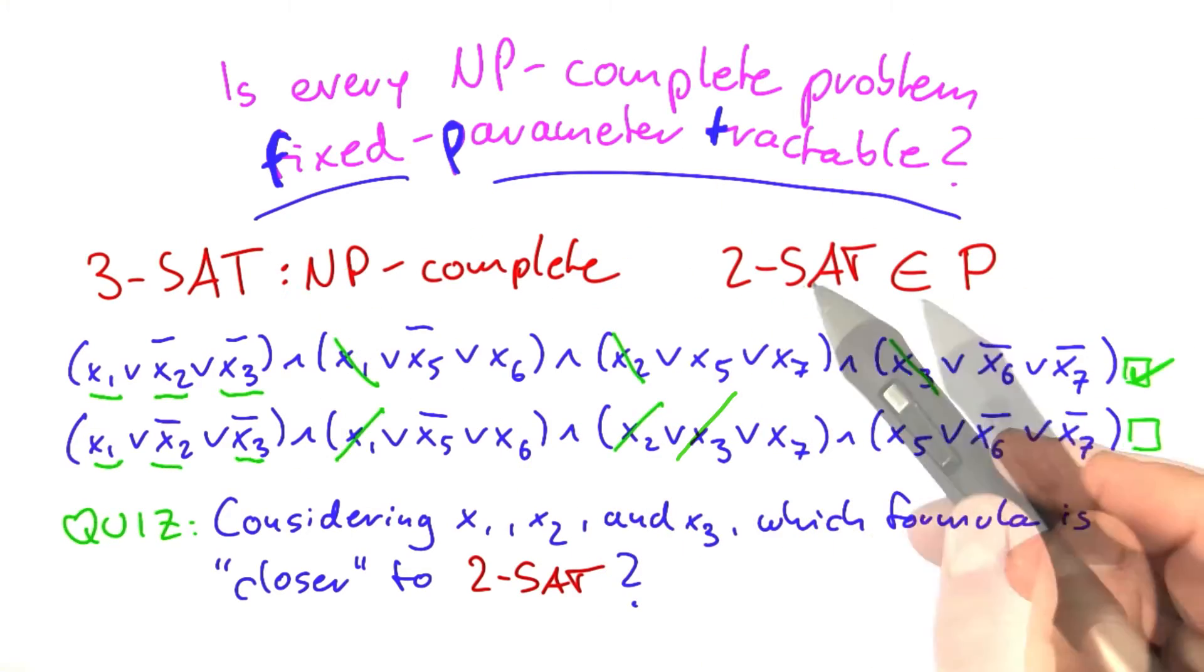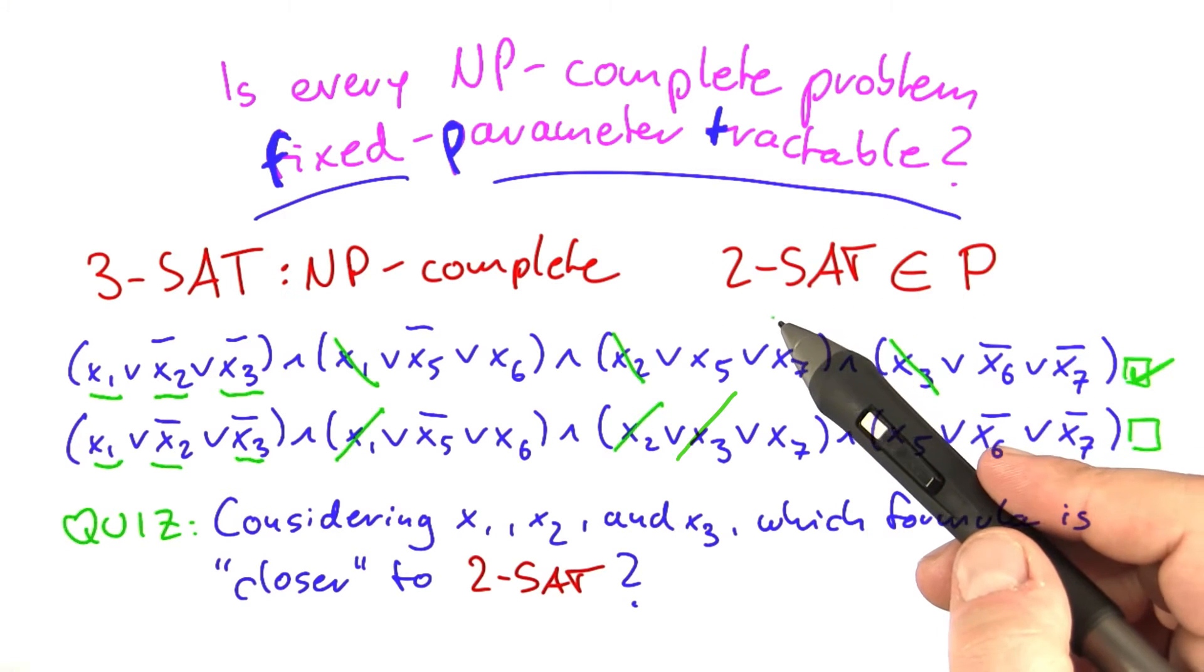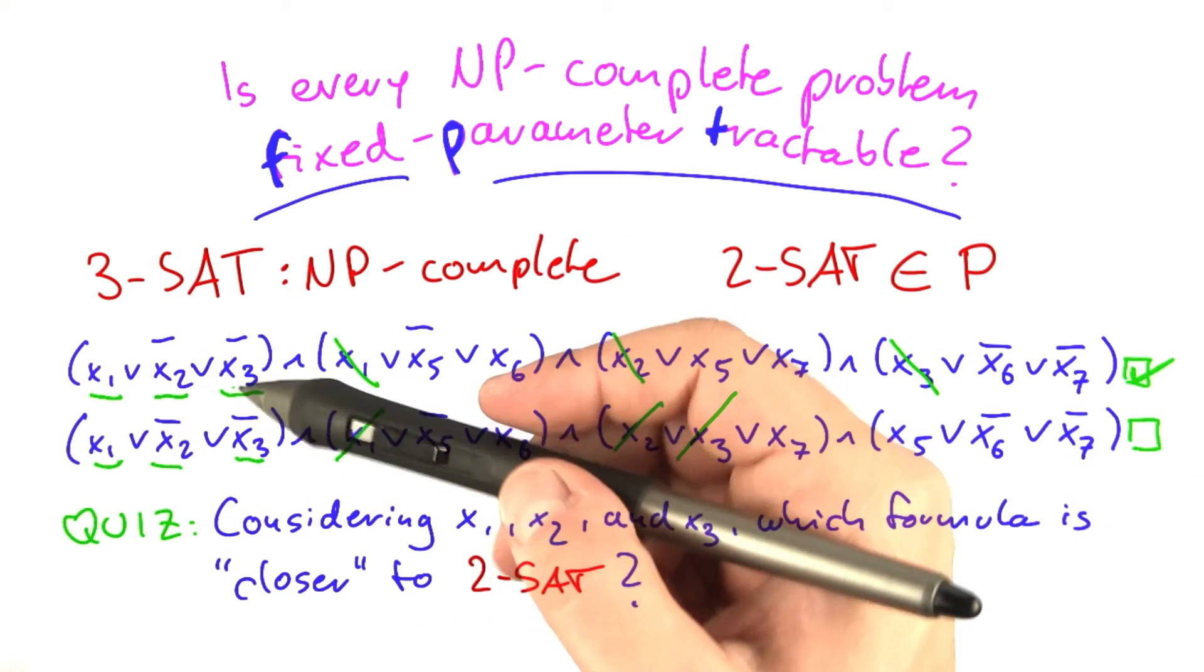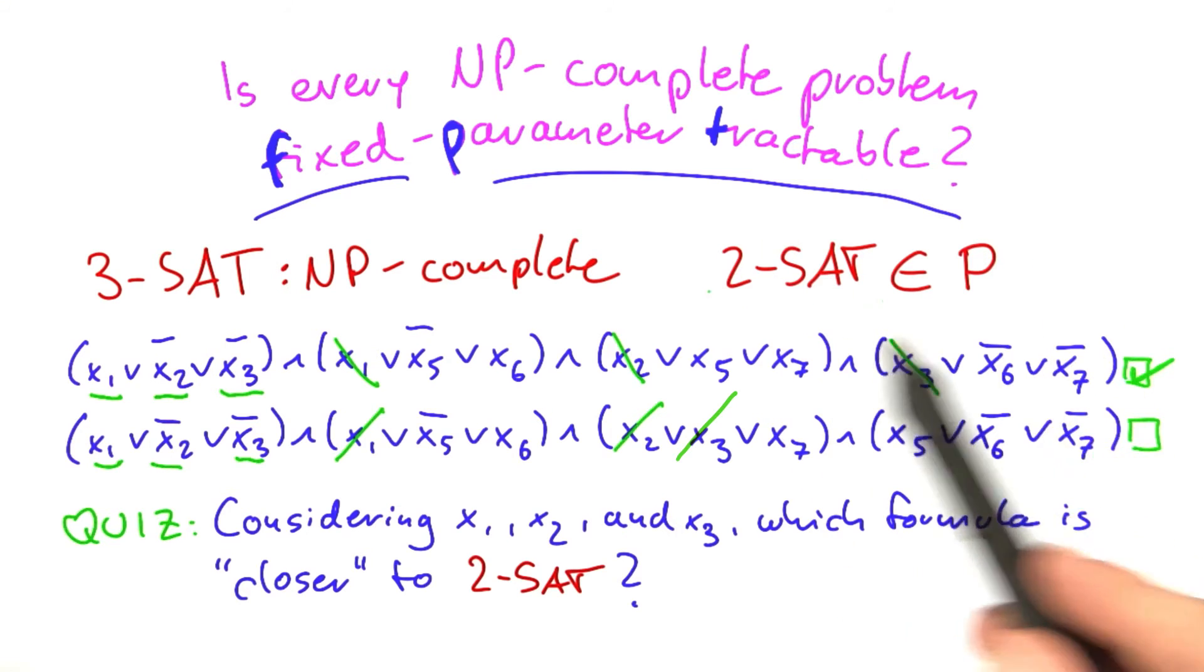There are a number of variants of SAT that are known to be solvable in polynomial time. And what these solvers do is they will try to figure out if the boolean formula that they are given is actually close to one of those polynomial time solvable instances.